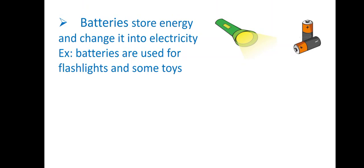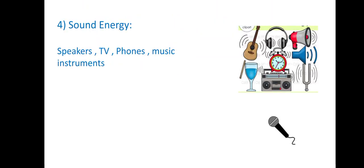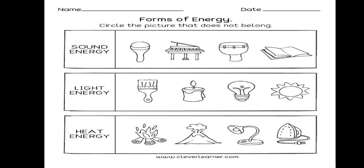The last type is sound energy. Sound energy is what you can hear from certain things. If we have a speaker, there is sound coming from it — that is sound energy. TV, phones, and music instruments are also examples. Anything that produces sound is called sound energy.